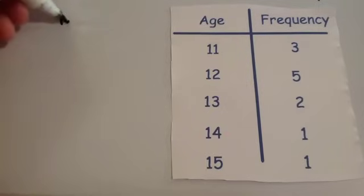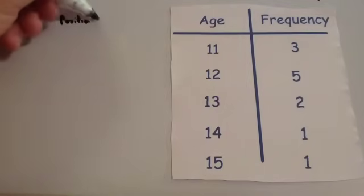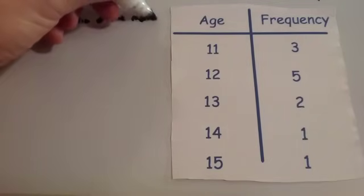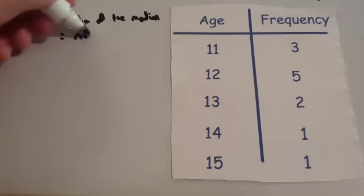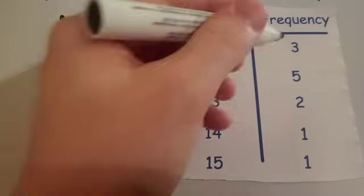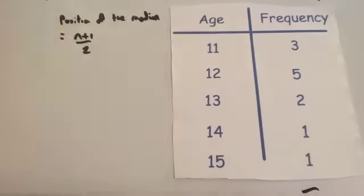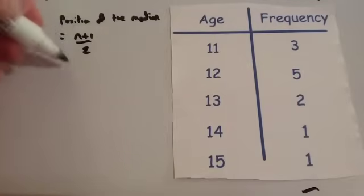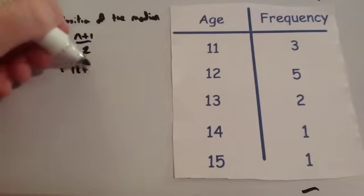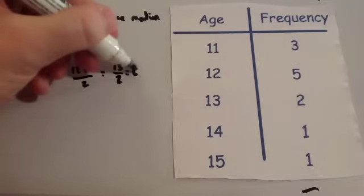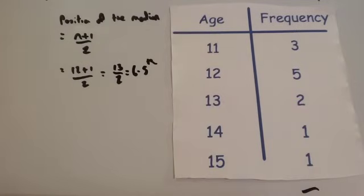So the position of the median equals n plus 1 over 2. So you've got 3, 8, 10, 11, 12. So all together, there's 12 people. So you're going to do 12 plus 1 over 2, which equals 13 over 2, equals 6.5th value. That's the 6.5th person.